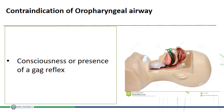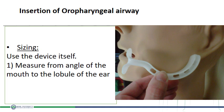مشكلته إنه لو العيان ده semi-conscious أو عنده gag reflex، ما أقدرش أركبه له، لأن الطرف بتاعه بيلمس الـ posterior pharyngeal wall وده can stimulate the gag reflex. علشان أركبه، لازم أختار الـ size المناسب للعيان. أقيس الـ size بطريقة من اتنين: يا إما بقيس من angle of the mouth لـ lobule of the ear — من soft tissue to soft tissue.